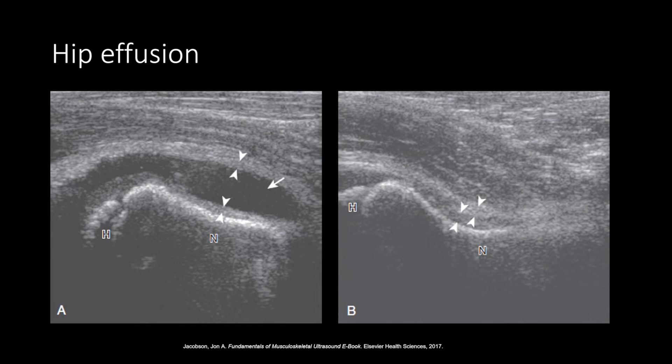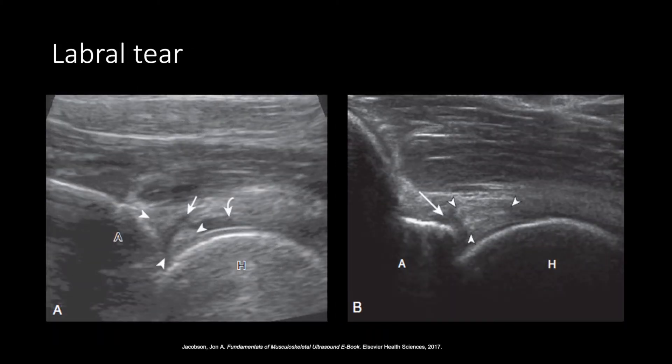Here on the left image, we have a long axis view of the proximal femur with fluid in the anterior joint recess. On the right image, this is the contralateral hip, which is normal with no effusion. These are long axis views of the femoral neck. The left image shows an anechoic cleft, denoted by the white arrow, at the hyperechoic fibrocartilage labrum indicating a tear. The curved arrow shows a small joint effusion.